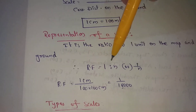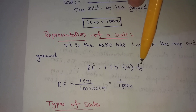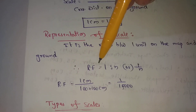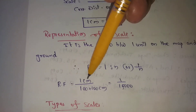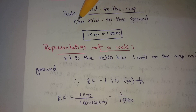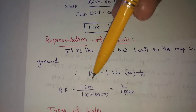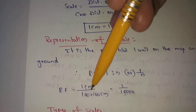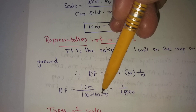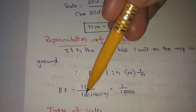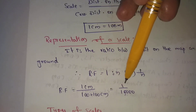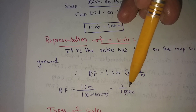RF (Representative Fraction) equals 1 to N, written as 1/N. For example, if 1 centimeter on the map equals 100 meters on the ground, then RF = 1 cm / (100 m). Converting 100 meters to centimeters gives 10,000 cm, so RF equals 1 to 10,000, or 1/10,000.